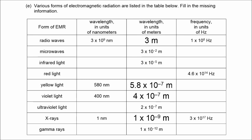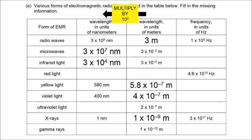If we have to go from units of meters into nanometers, we're going to multiply by 10 to the 9th. So for microwaves, the wavelength would be 3 times 10 to the 7th nanometers. For infrared light, 3 times 10 to the 4 nanometers. Ultraviolet light would be 200 nanometers. And gamma rays would be 0.001, or 10 to the negative 3 nanometers.